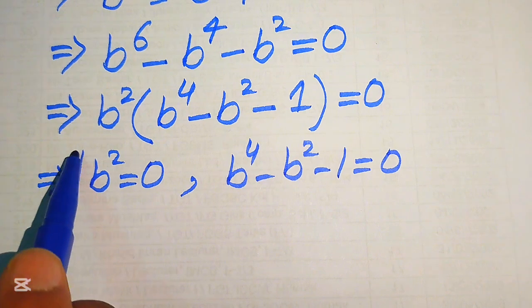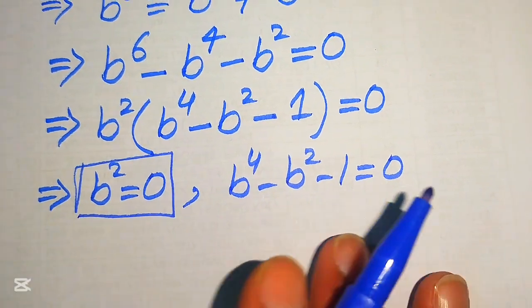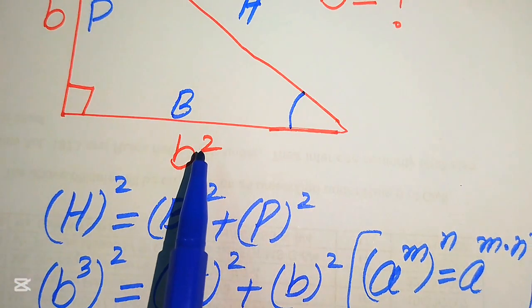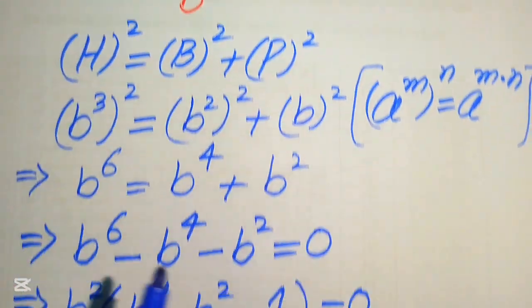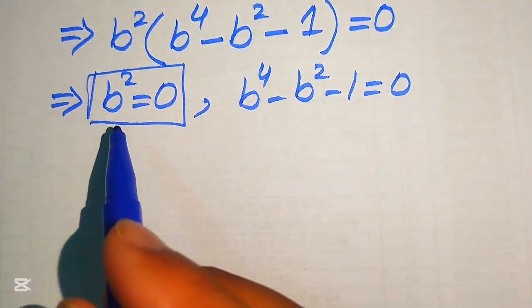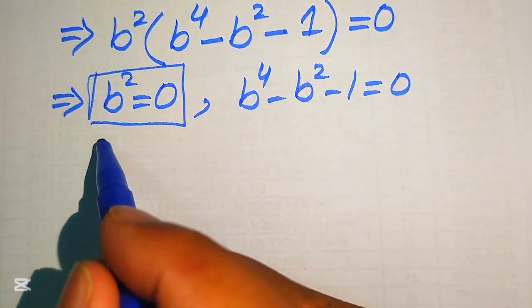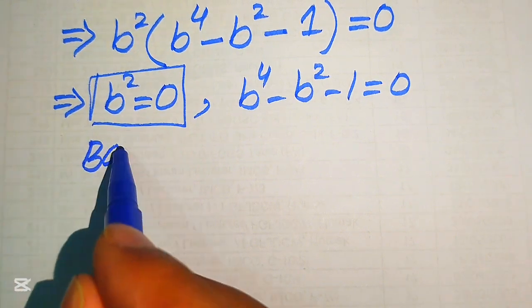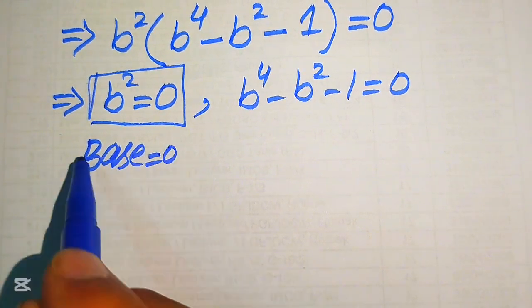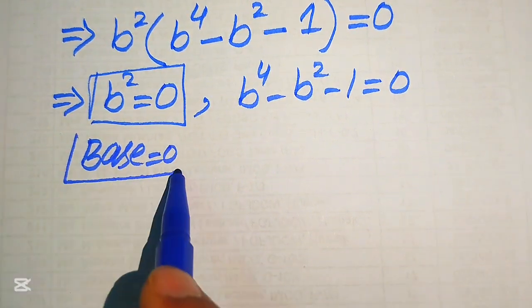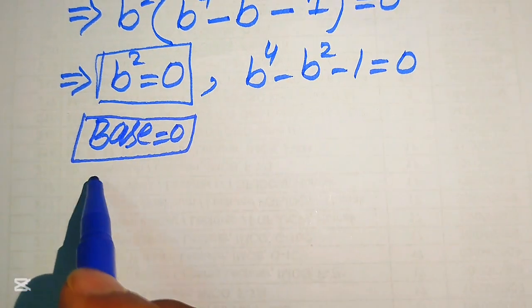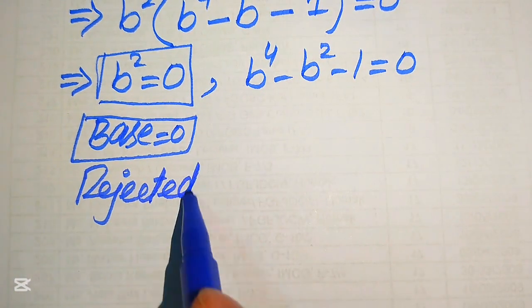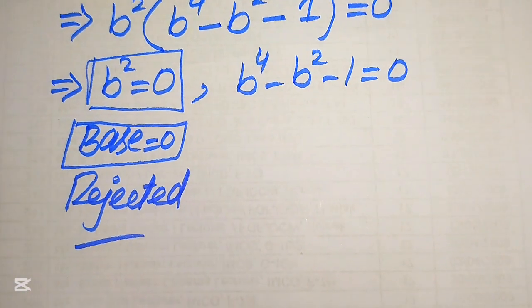Since b² represents the base of this right triangle, and no side length of a triangle can equal zero, we reject the case b² = 0. The base cannot be zero.